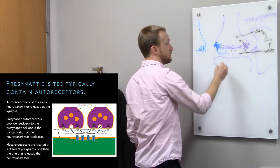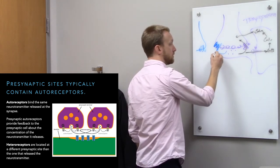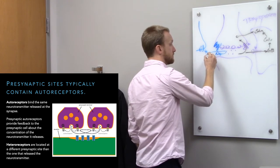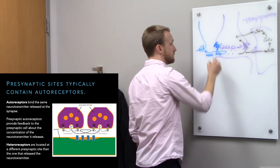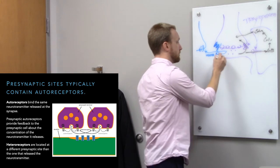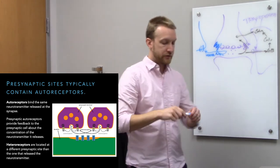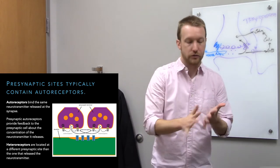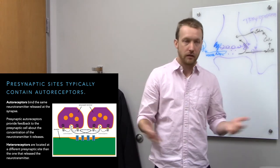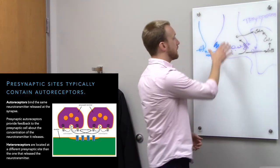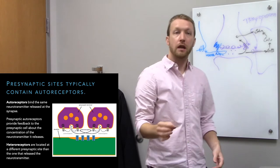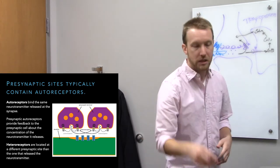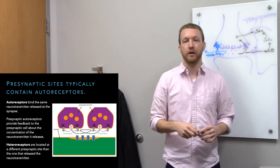If the receptor is at a different synapse — say there's another presynaptic site — neurotransmitter binding there would be hetero, giving us heteroreceptors. Autoreceptors and heteroreceptors are found at presynaptic sites and it just depends on which neurotransmitter binds to them, but they're essentially the same thing. They're going to regulate presynaptic release, and most likely decrease the likelihood of releasing neurotransmitters.